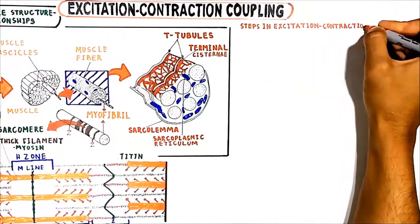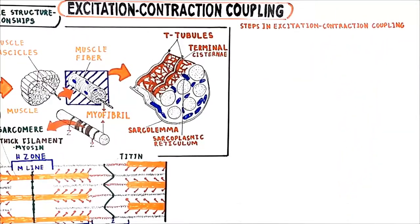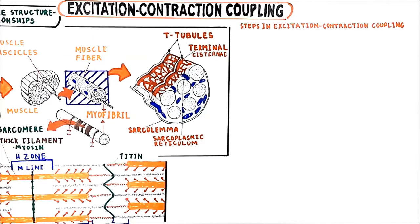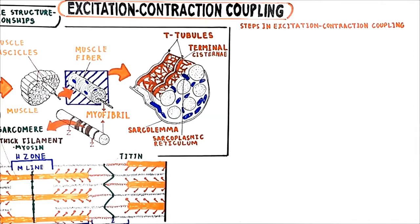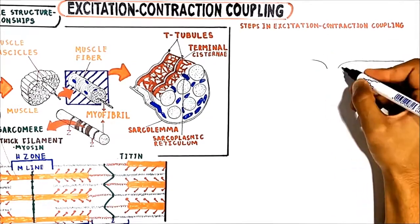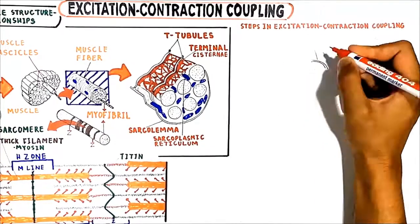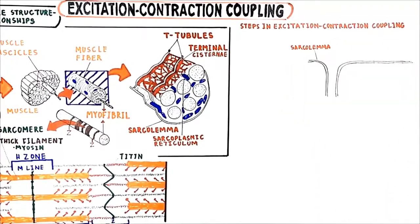Now let's talk about the steps in excitation-contraction coupling in skeletal muscle. Excitation-contraction coupling is the process by which a muscular action potential in a muscle fiber causes the myofibrils to contract. We will see step by step how the action potential causes the release of calcium from the sarcoplasmic reticulum, which plays an important role in contraction of the muscle.